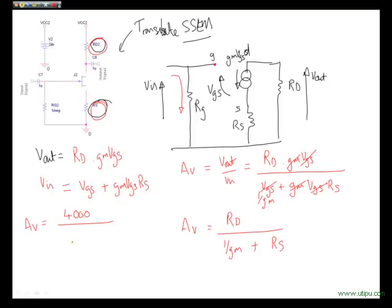One over GM, well GM is 1 over 500, so 1 over 500 is 500, plus RS was 500. 4000 divided by 1000 equals a gain of 4. There's our value of AV.